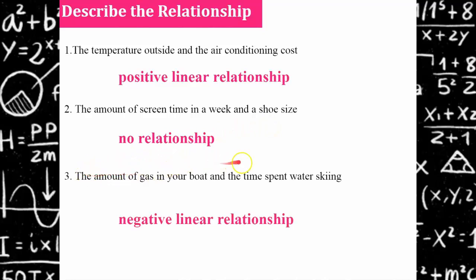The amount of gas in your boat and the time spent water skiing would show a negative linear relationship. The more gas you used, the more time you would have spent. So as the time is increasing, the gas in the boat is decreasing, and that would show a negative linear relationship.